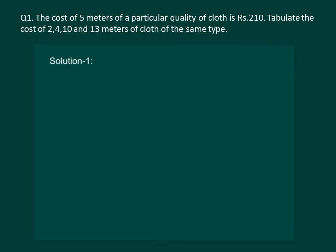It says that the cost of 5 meters of a particular quality of cloth is Rs. 210. Tabulate the cost of 2, 4, 10 and 13 meters of cloth of the same type. We would solve this example using the concept of direct proportion.